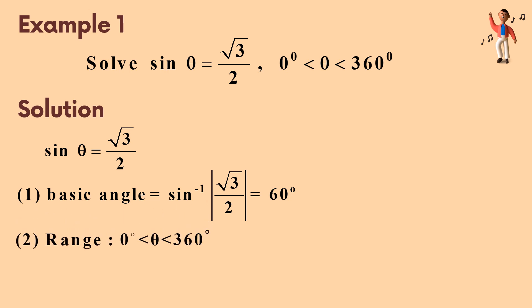Secondly, find the range. Thirdly, theta lies in first and second quadrants. The diagram shows that the basic angle lies in first and second quadrants. So, we get theta equal to 60 degree and 120 degree.